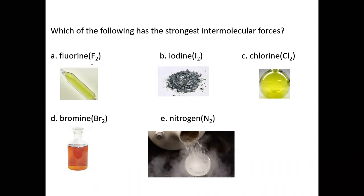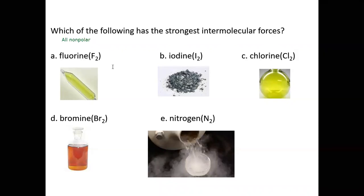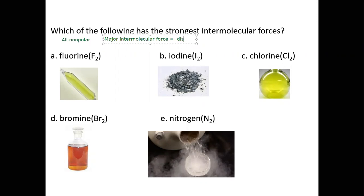What we have to notice is that fluorine, iodine, chlorine, bromine, and nitrogen are all one particular type of molecule, and these molecules are all nonpolar. So fluorine, iodine, chlorine, bromine, and nitrogen, which are all diatomic molecules, are all nonpolar. When they're all nonpolar, the main intermolecular force — the major intermolecular force — is dispersion or London forces.